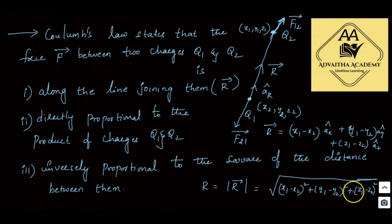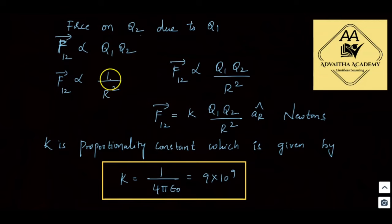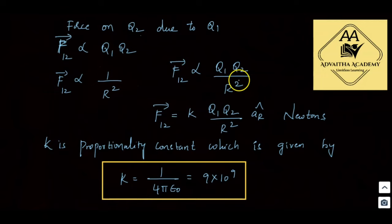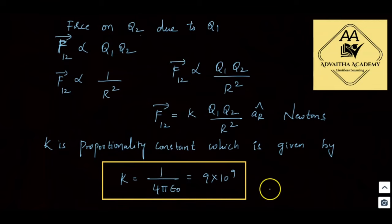The distance r is calculated as discussed. F12-bar is directly proportional to q1·q2, and inversely proportional to 1/r². Combining both gives F ∝ q1·q2/r². The proportionality constant k = 1/(4πε₀) = 9 × 10⁹. Epsilon naught (ε₀) is the permittivity of free space, with value 8.854 × 10⁻¹² F/m or 10⁻⁹/(36π) F/m.